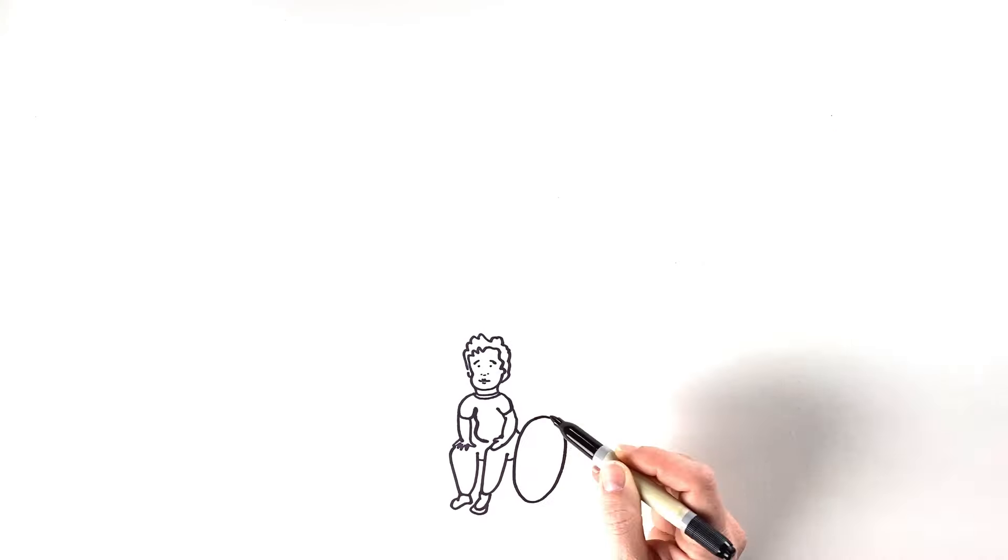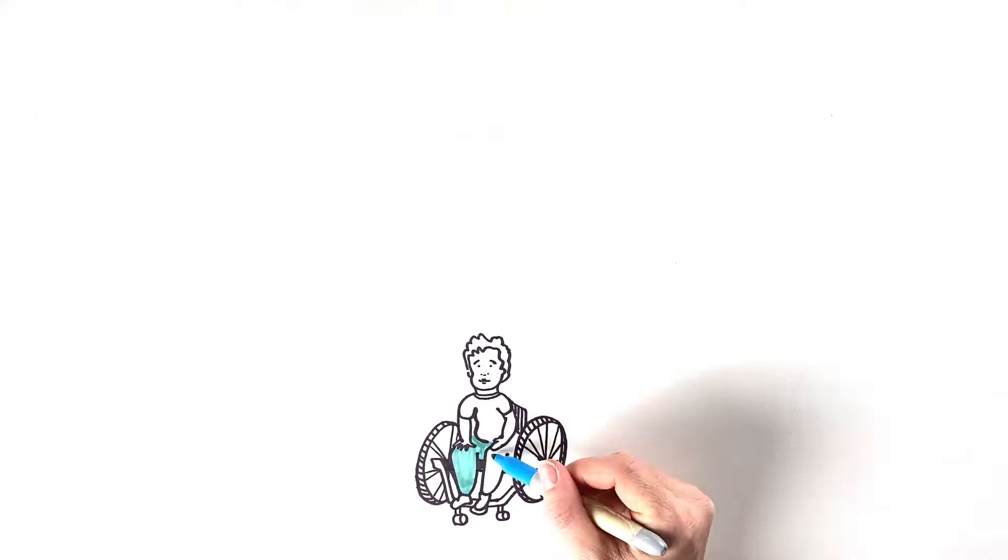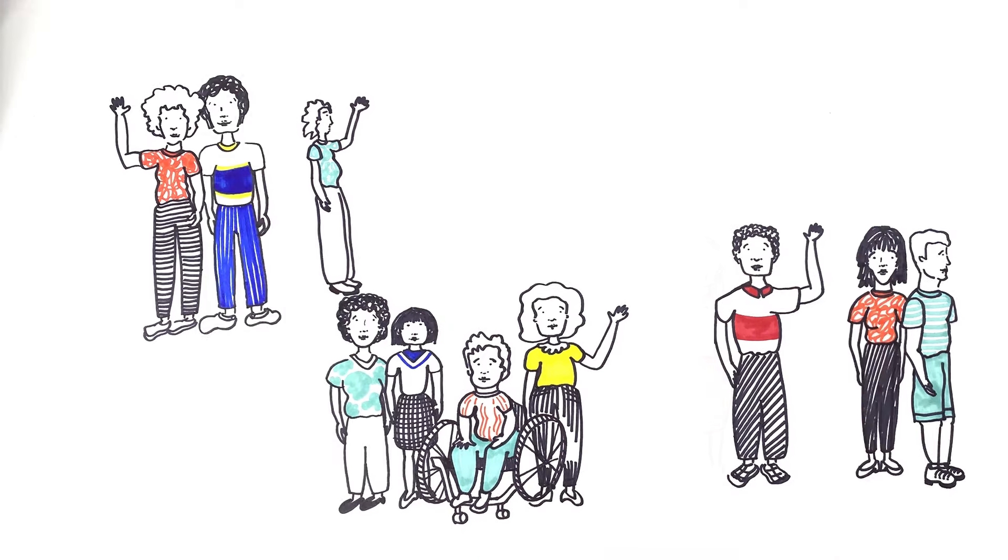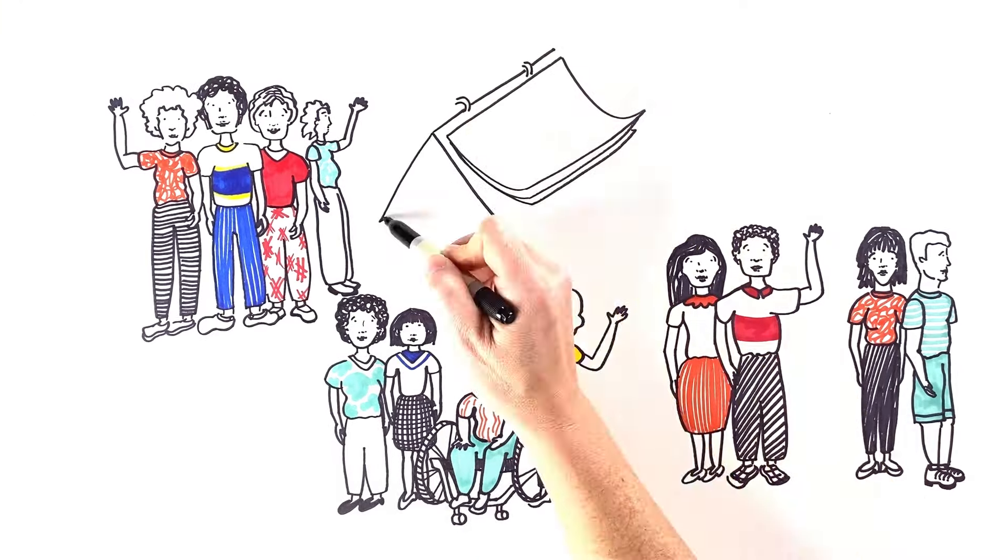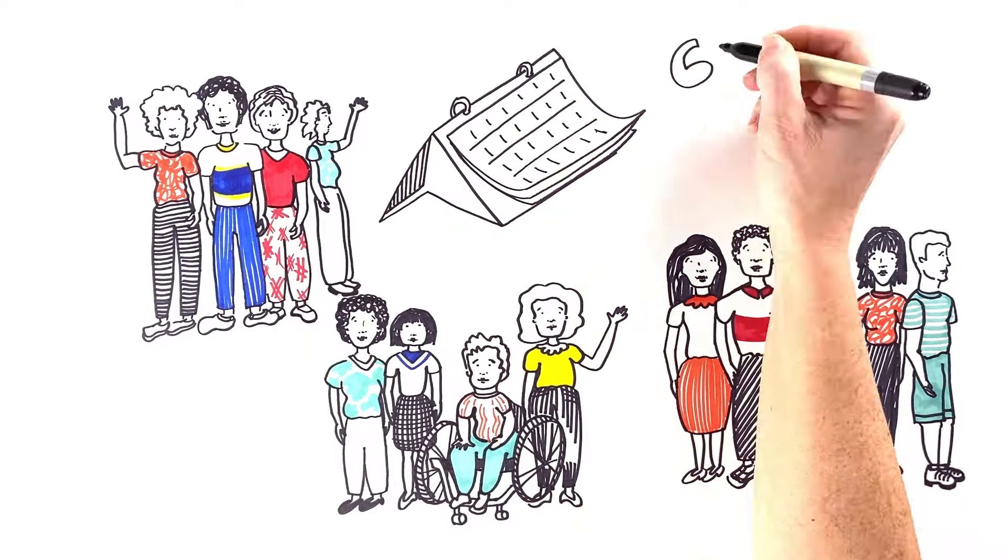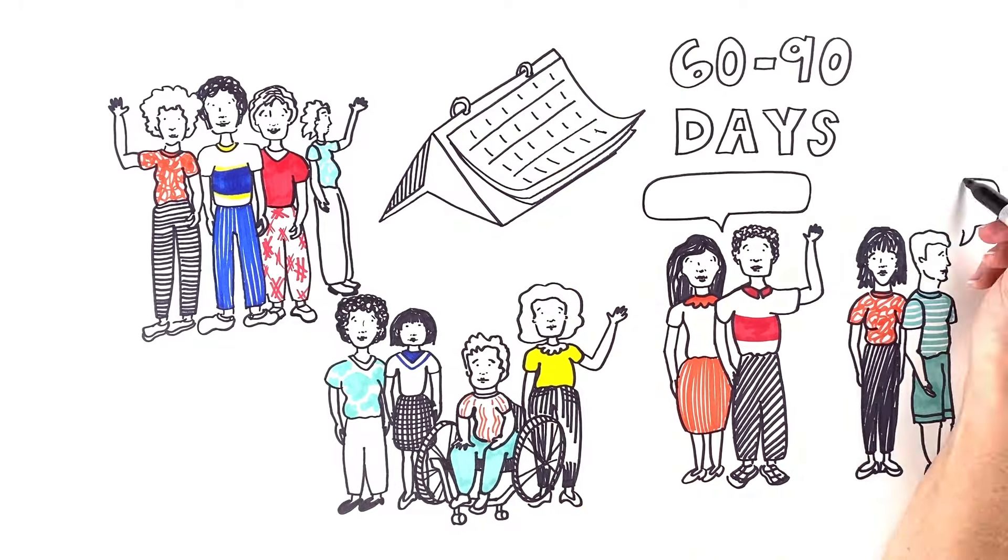Next is the public's turn. There are usually 60 to 90 days to submit public comments online at regulations.gov or by mail.